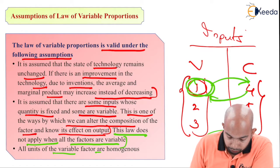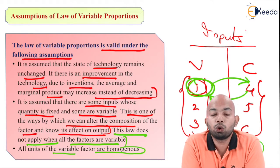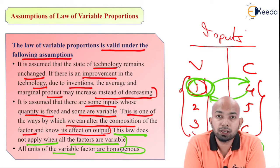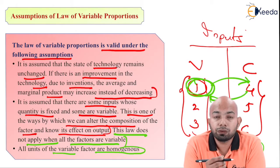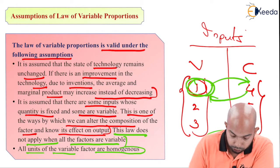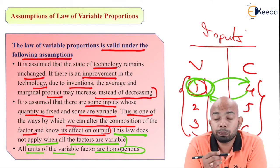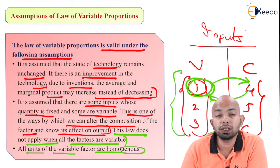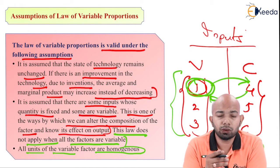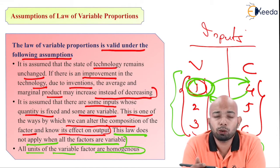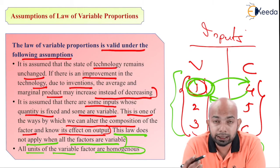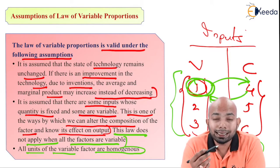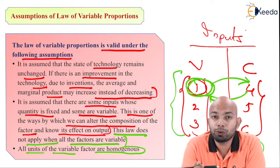All units of variable factors are homogeneous — meaning they are of a similar kind or same nature. Whatever factors you place under the variable group, like factors 1, 2, and 3, these are homogeneous in nature — somewhat similar, like twins or triplets with similar characteristics. Hence they are placed under variable, so that if one changes, the others can cope up for it.